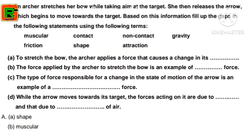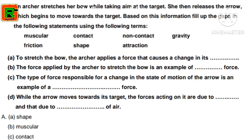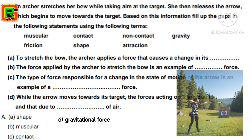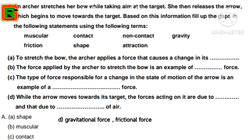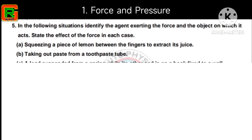D) While the arrow moves towards its target, the forces acting on it are due to gravity and friction due to air. The gravitational force continuously acts on the moving arrow, and the air in the atmosphere applies a frictional force on it.